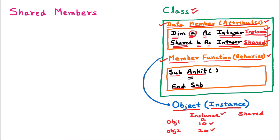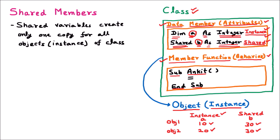For the shared variable 'b', if the value is 30, that same value will be the same across all objects. Whether we access through object1 or object2, the value is 30 — it is the same. So we can say that shared variables create only one copy for all objects of the class, meaning every object of the class will have the same value for shared variables.